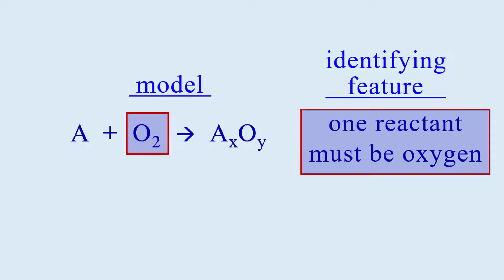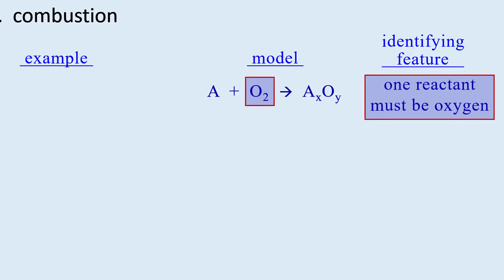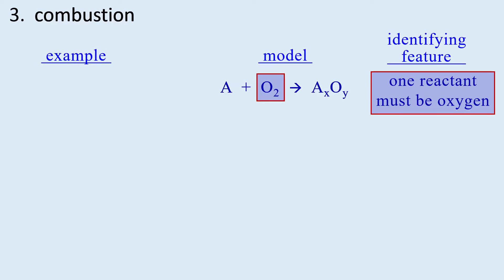There are many reactions constantly occurring all around us and in our bodies that are substances reacting with oxygen in the air or in our cells, but these are not combustion. We would notice combustion immediately because it gives off lots of heat and has a flame.